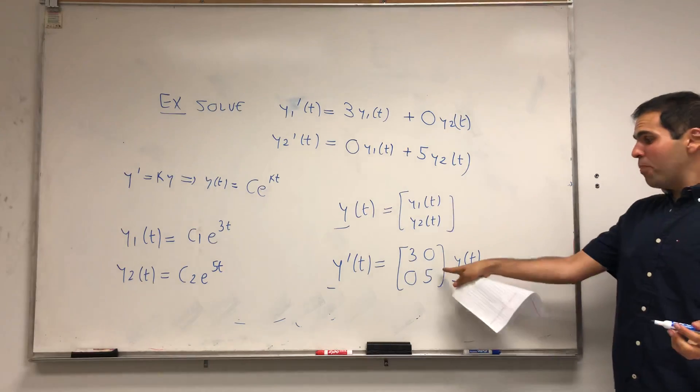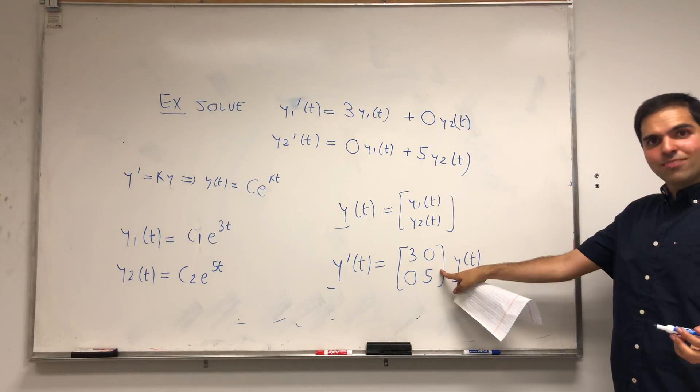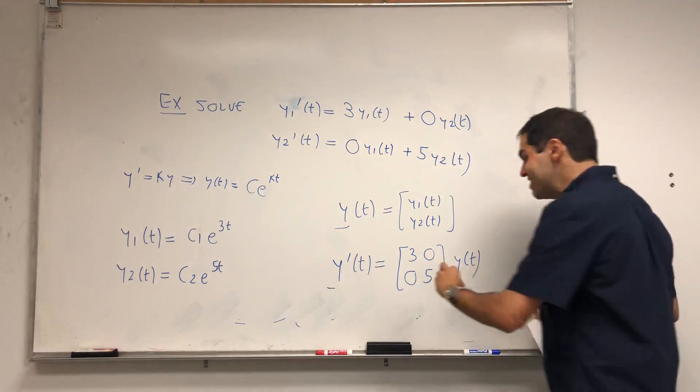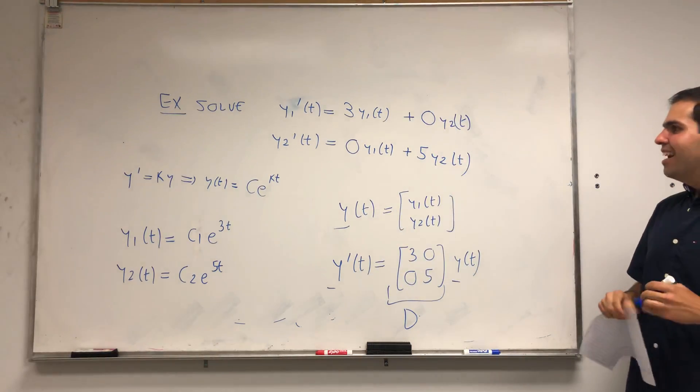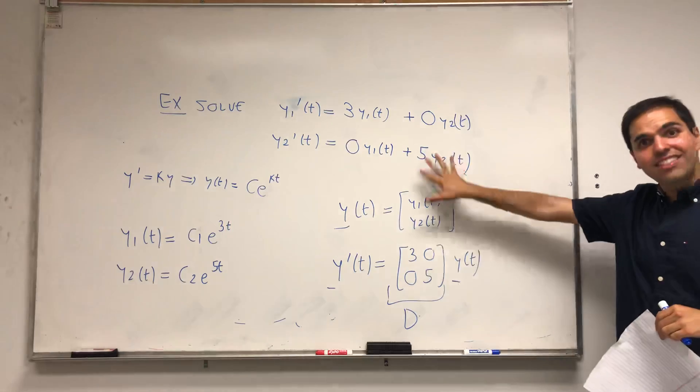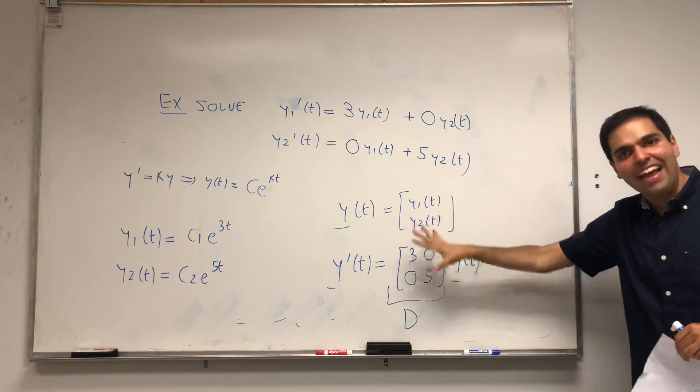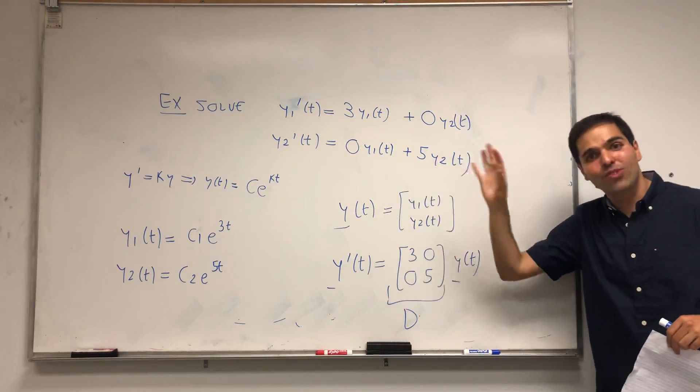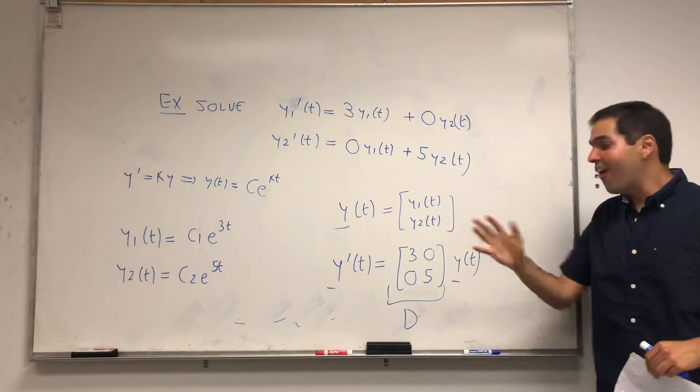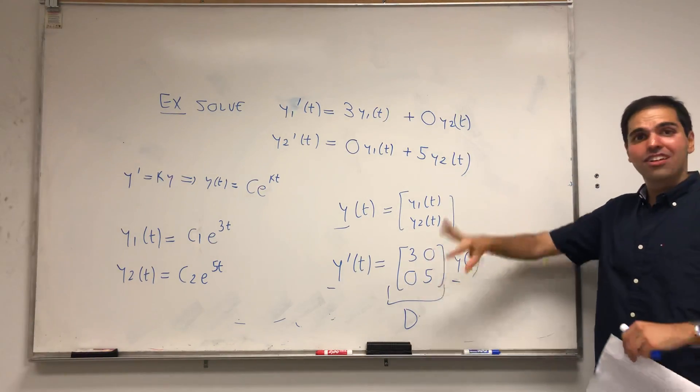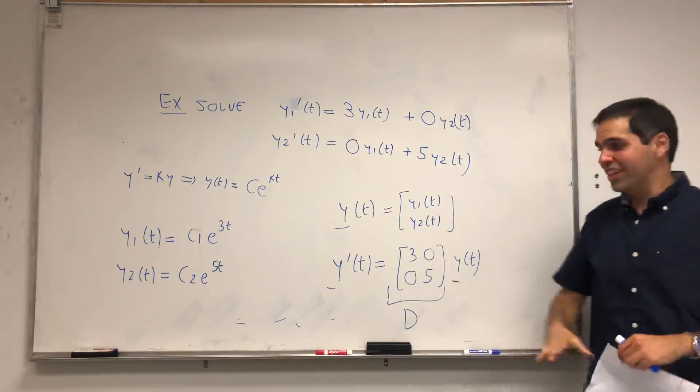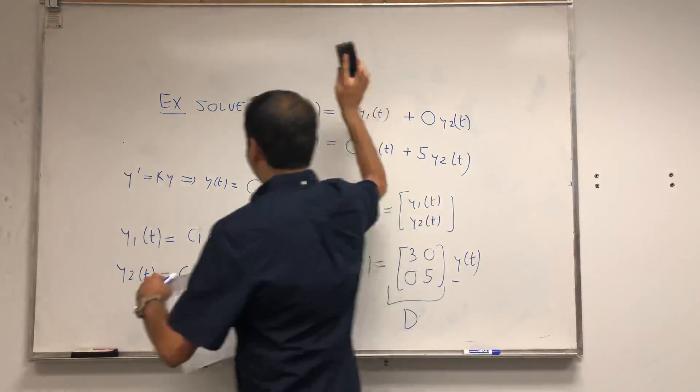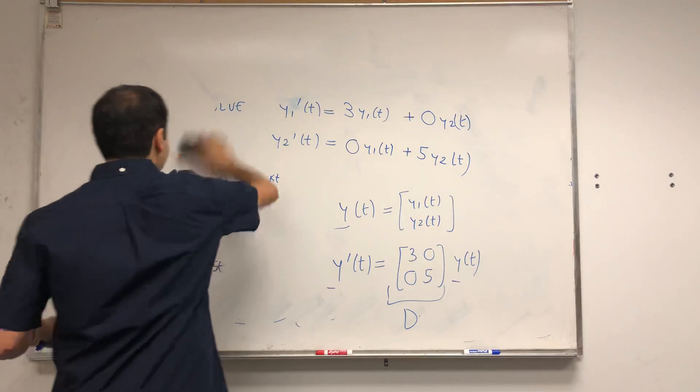What's the point? What do you notice about this matrix? In fact, it is diagonal. Let's just write it as D. The point of this example is: systems with diagonal matrices are easy to solve because they're uncoupled, and you just use calculus tricks. All right, now let's go back to the previous example.